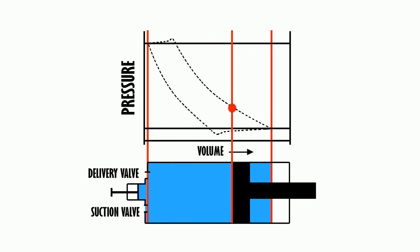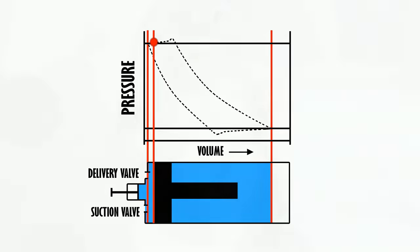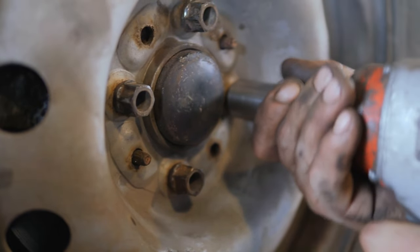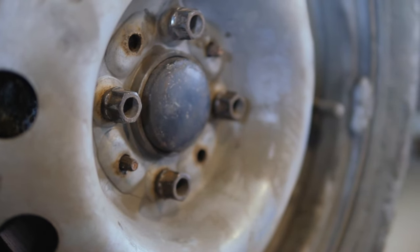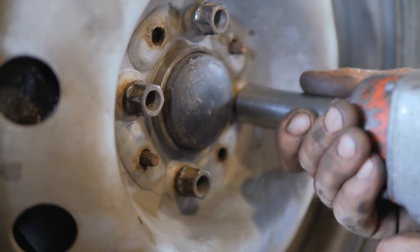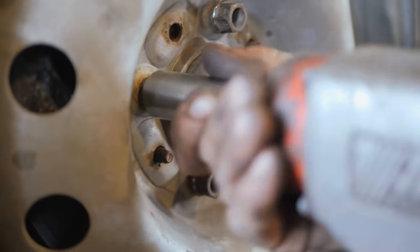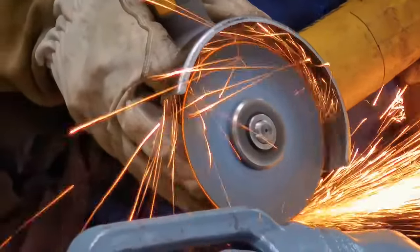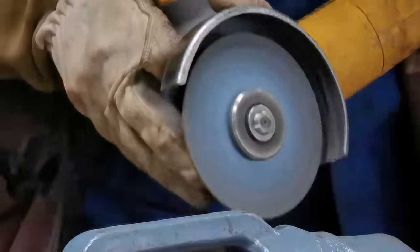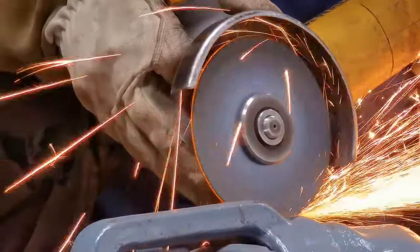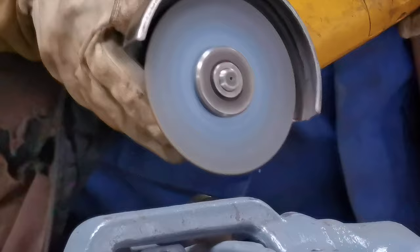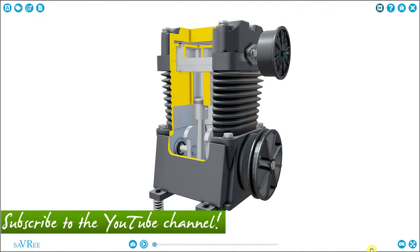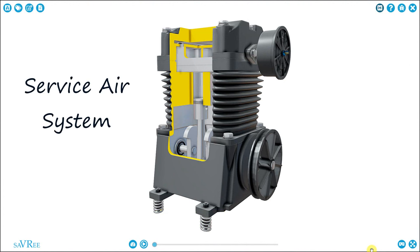We may compress air because we need to use it to power hand tools. You'll often see pneumatic hand tools in workshops, on building sites, in engine rooms, in industrial plants and things like that. The hand tools might be used for things like grinding, wire brushing, or for undoing nuts and bolts, although there are many other applications. If we're using compressed air for hand tools, we'll often call that compressed air system the service air system, and it will operate at around six bar, maybe seven bar, which is about 90 psi.